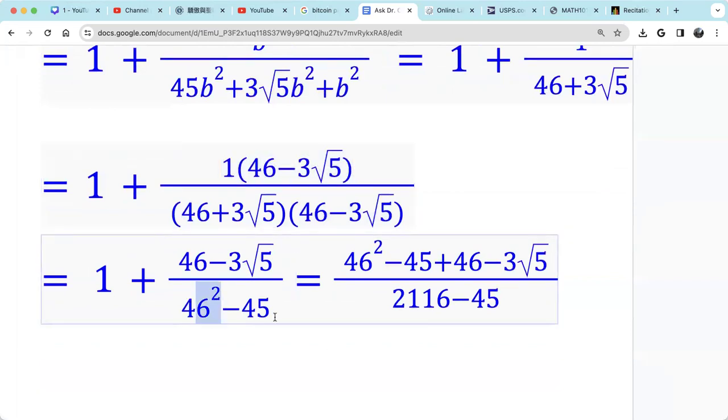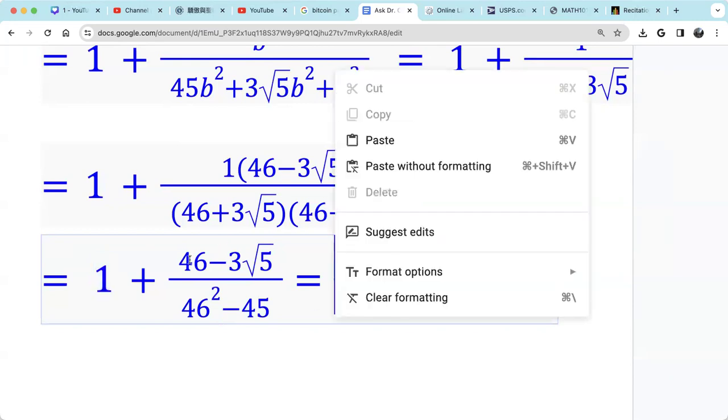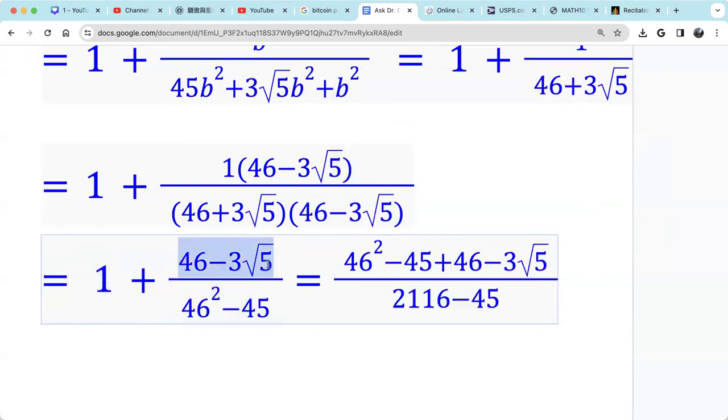So 46 squared, you calculate it. That's 2116 minus 45. In the numerator, so now we want to change this 1 to be 46 squared minus 45 divided by itself, because we want to combine with this numerator.